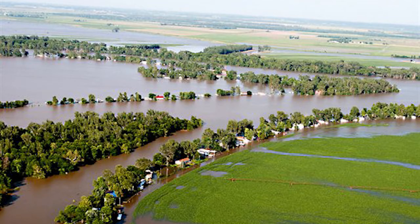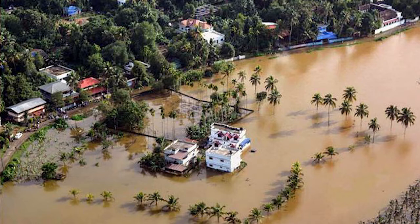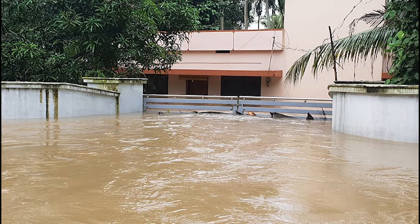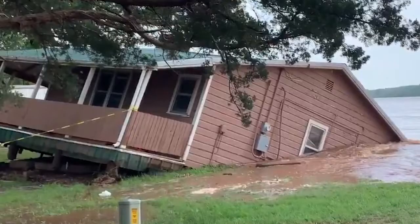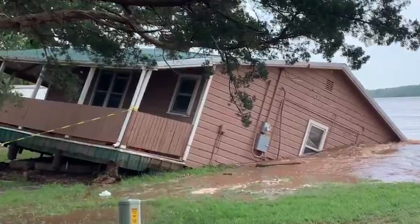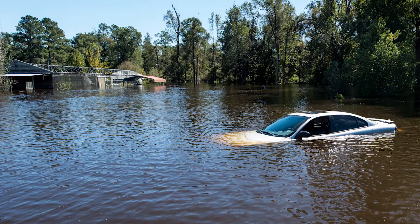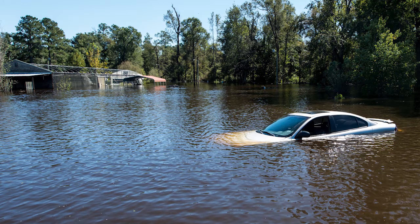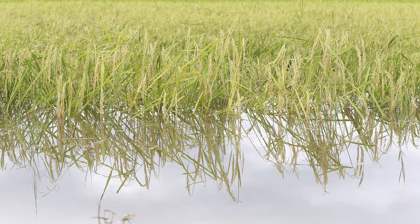A flood happens when a large amount of water covers an area that is not usually covered by water. Floods can be dangerous. Flood water is very powerful and can destroy many things. Floods can knock over trees, cars, bridges, and buildings.